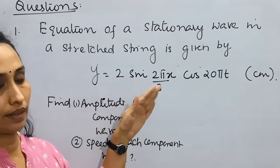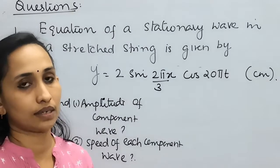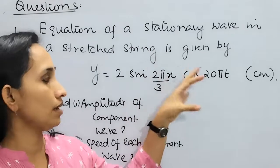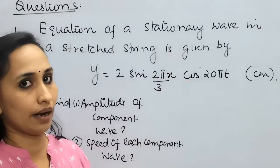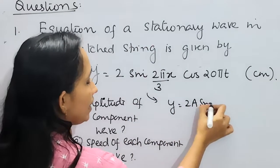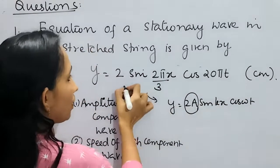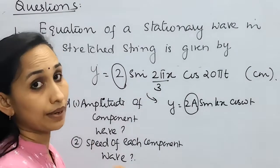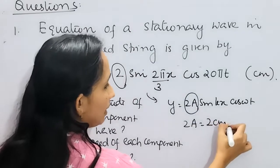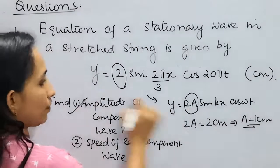While you have a question like this, always compare with the standard equation. There are four forms of stationary wave equations — it should be a product of a kx term and an omega-t term. Comparing with the standard form y = 2a sin(kx) cos(ωt), 2a represents the total amplitude where a is the amplitude of each component wave. So 2a = 2 cm, giving a = 1 cm.